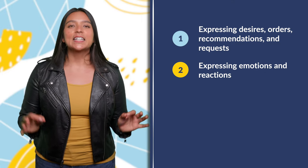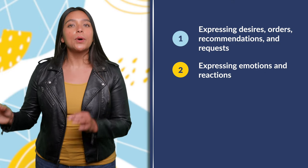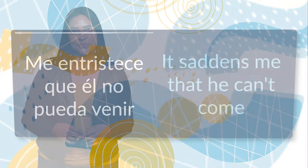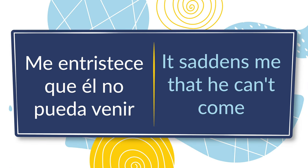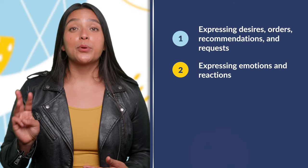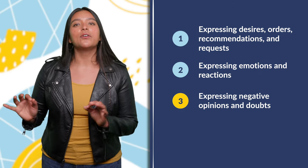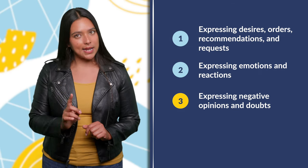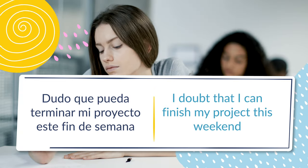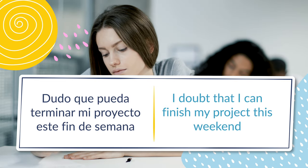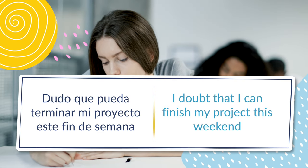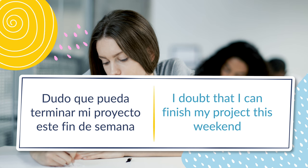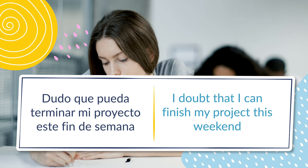Number two: expressing emotions and reactions. For example, it saddens me that he can't come. Number three: expressing negative opinions and doubts. For example, I doubt that I can finish my project this weekend.